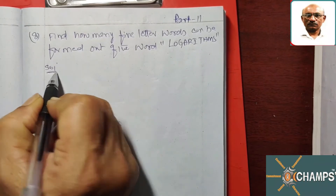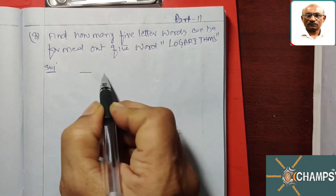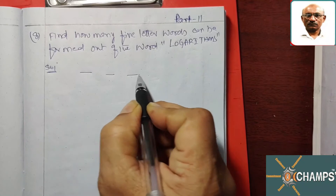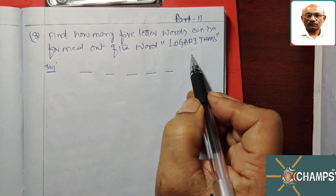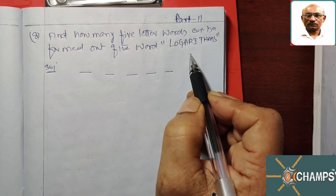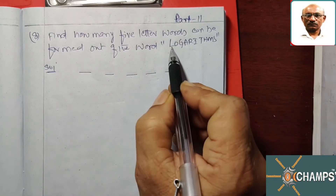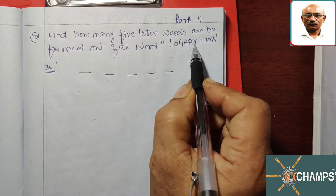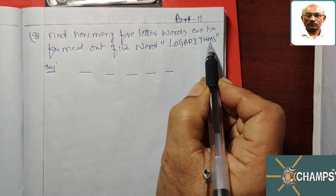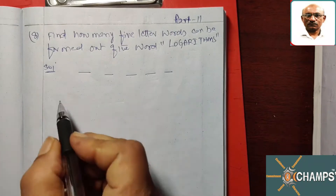See the solution. A 5-letter word is required, so we have 5 places. Let us see how many letters we have in 'logarithms' — it has 10 letters in total.